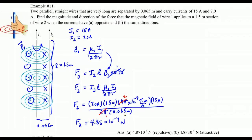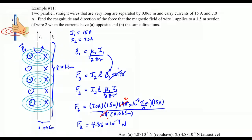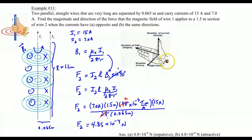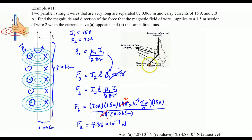Now we know the magnitude — let's determine the direction of that force. To find the direction of the force on wire 2 in field B1, we use the right-hand palm rule. Your thumb points in the direction of current I2 upward, and your fingers point in the direction of B1 into the page. Looking at this side view: current going up, field going in — the force is going to be pulling that wire to the left. So there is a magnetic force pulling wire 2 to the left.